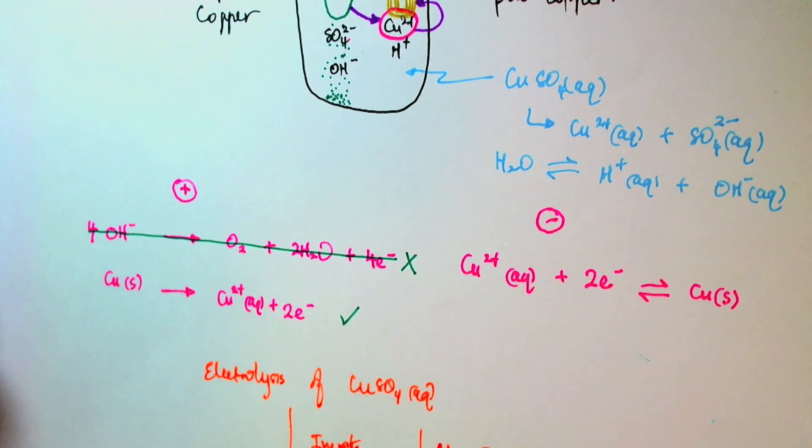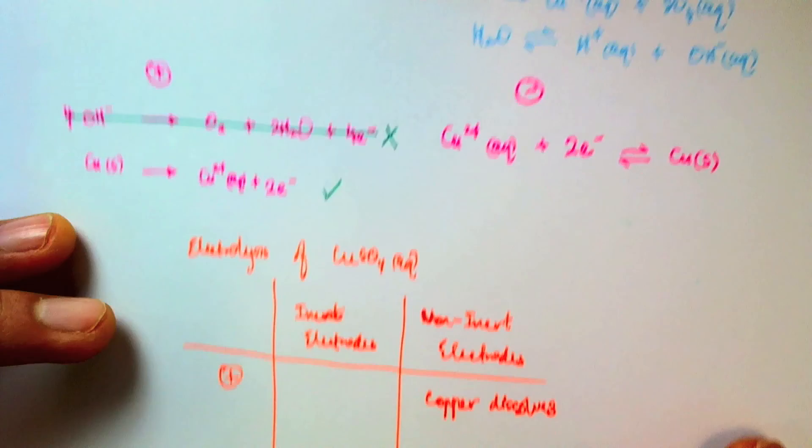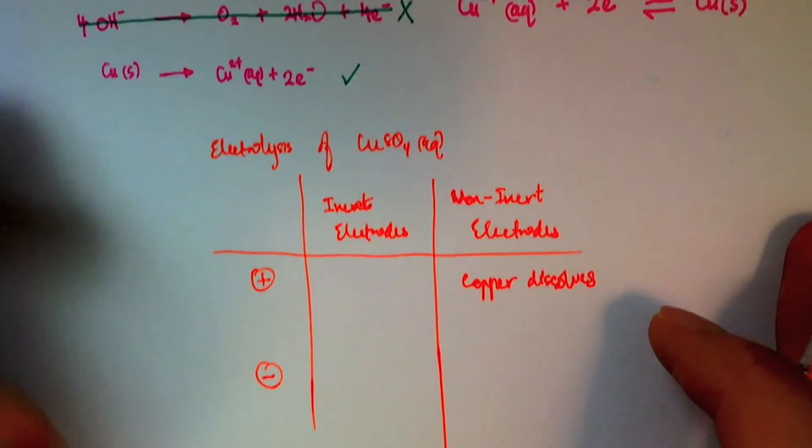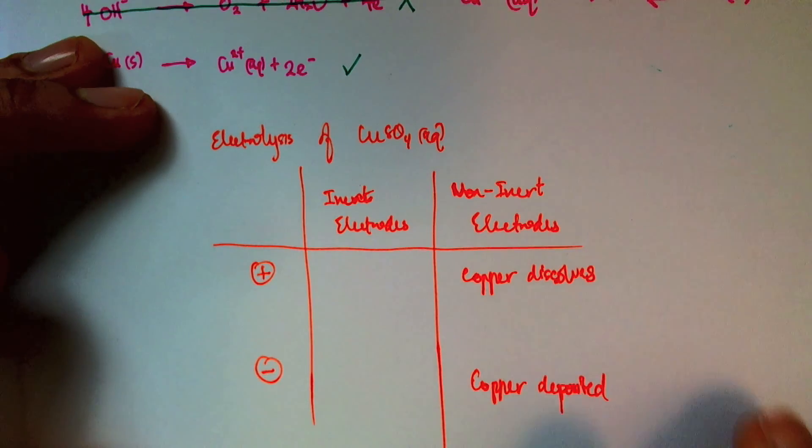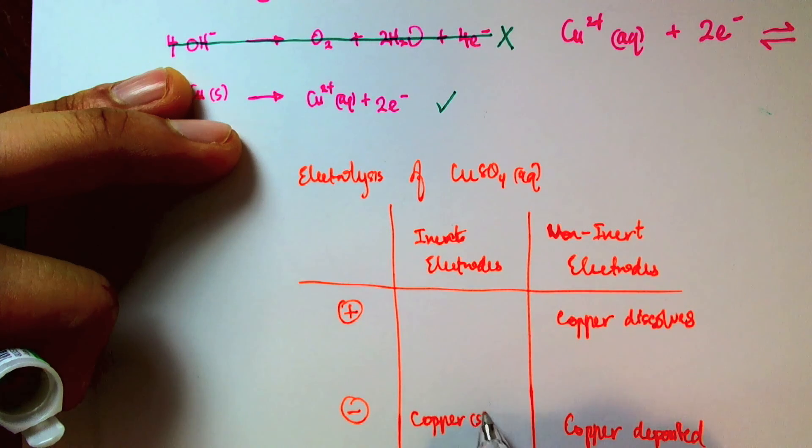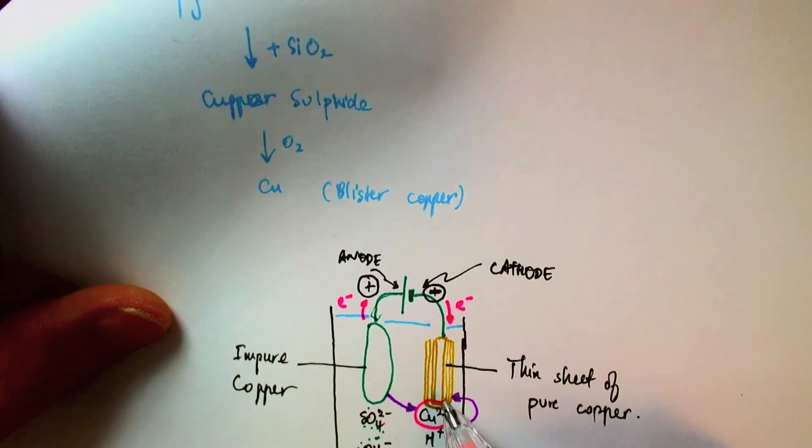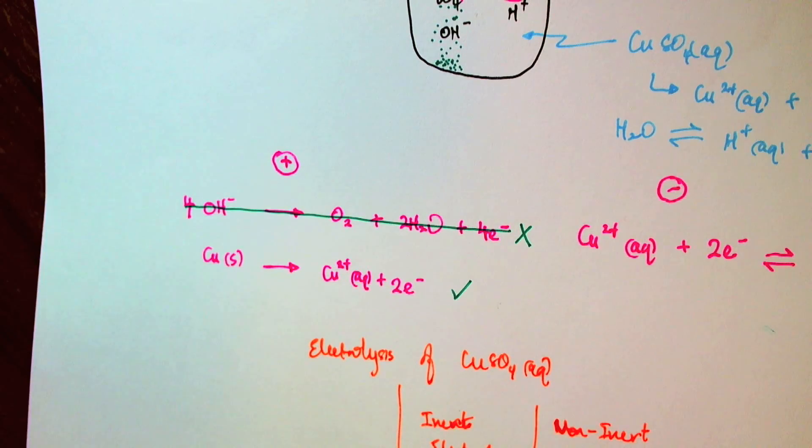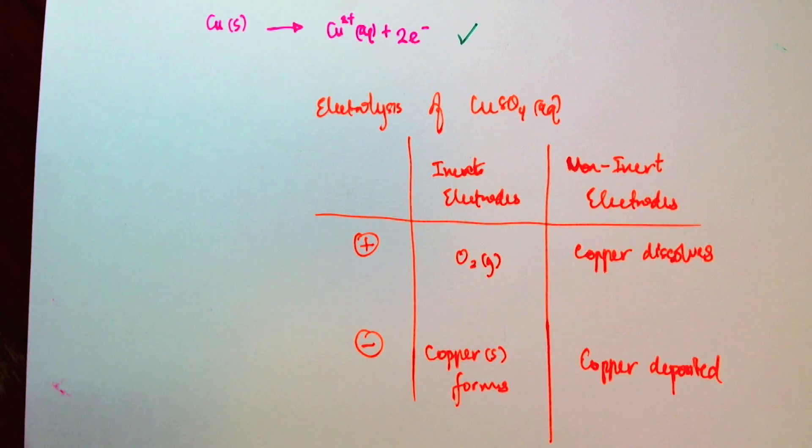So we see here that using non-inert electrodes at the anode, the copper dissolves. And at the cathode, copper is deposited. And if you recall, for the case of the inert electrodes, we also had copper solid forming. But it is not actually deposited at the electrode because it doesn't stick to carbon, so it just fell down to the bottom of the beaker. Well, at the anode, we found that oxygen gas formed. So that is the difference of the electrolysis of copper sulfate using inert electrodes and non-inert electrodes.